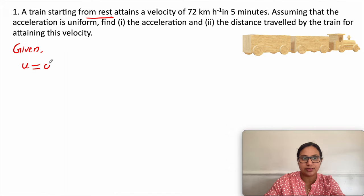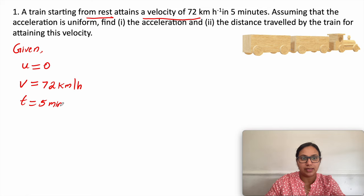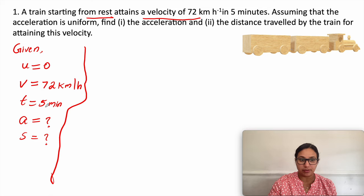A train starting from rest, so initial velocity u is zero. It attains a velocity of 72 kilometer per hour, so final velocity v is 72 km/h. Time t is five minutes. The important point is all quantities must be in the SI system, so we need to convert kilometer per hour to meter per second and five minutes to seconds.